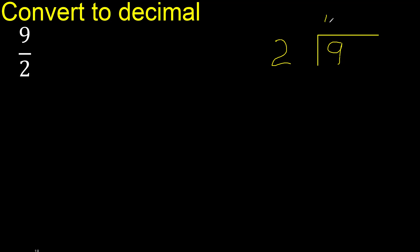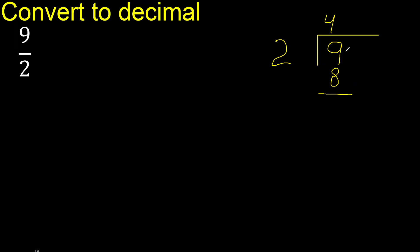Therefore another number: 2 multiplied by 4 is 8. 8 is the nearest. Therefore subtract: 9 minus 8 is 1.